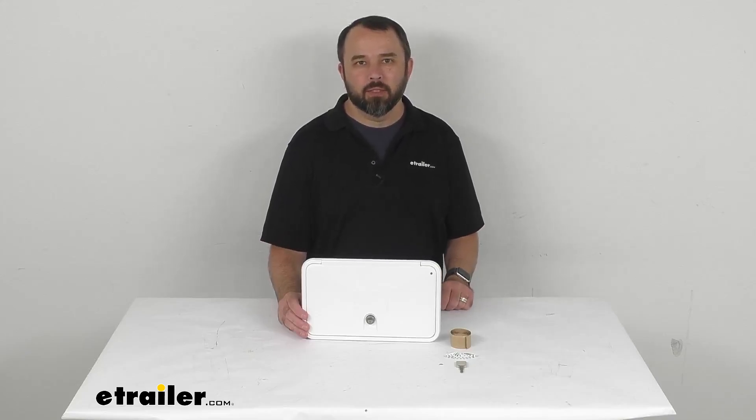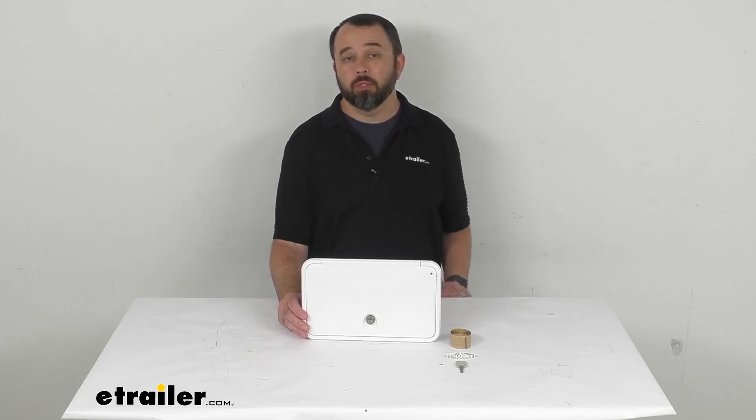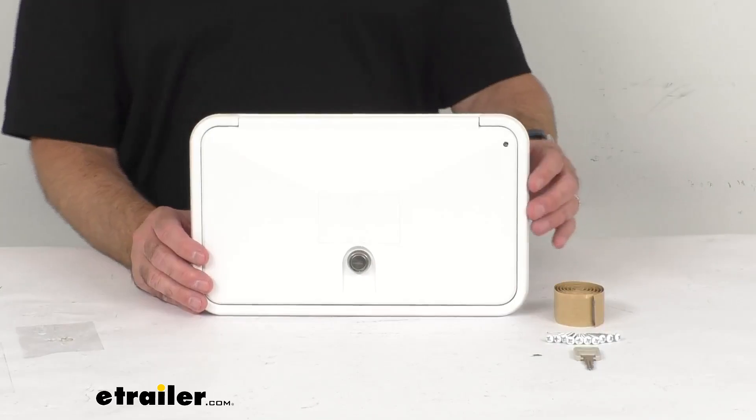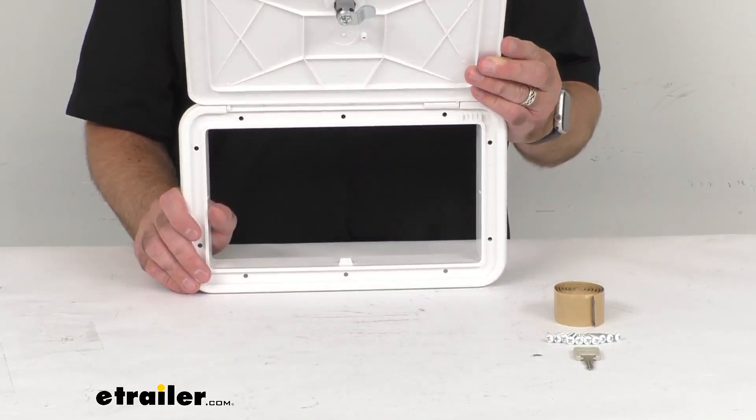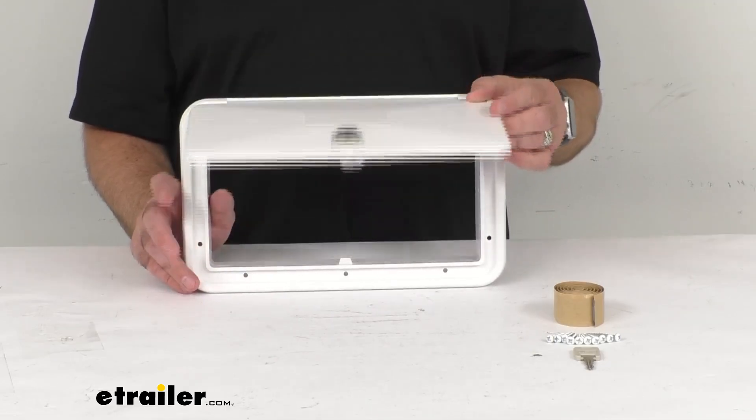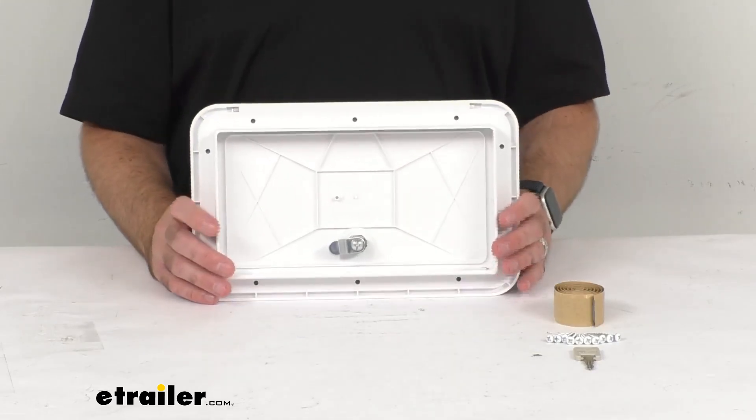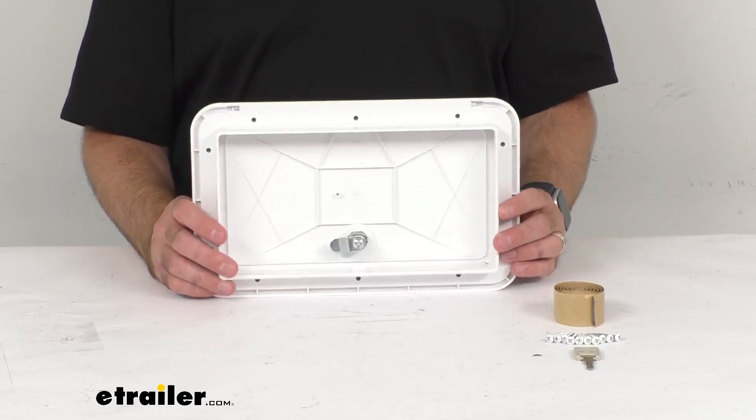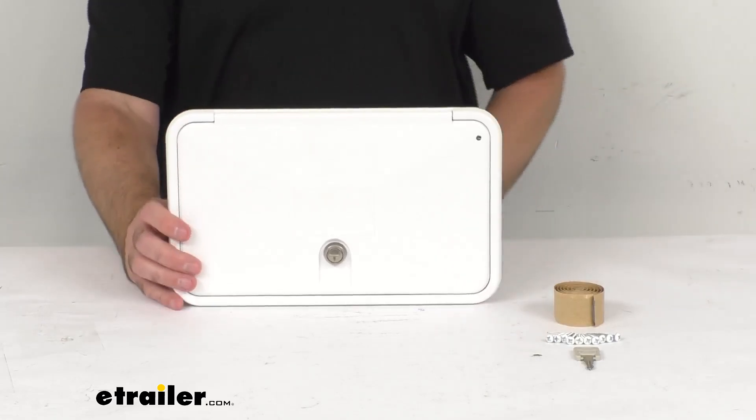Hi everybody, Andy here with eTrailer.com. Let's take a quick look at this B&B Polar White RV Multi-Purpose Hatch. This locking molded plastic hatch gives you exterior access for a fuel fill or port, and the open back ensures maximum access. Before we go any further, let me give you some overall dimensions